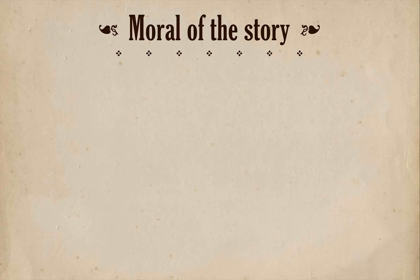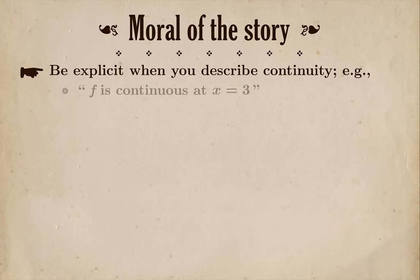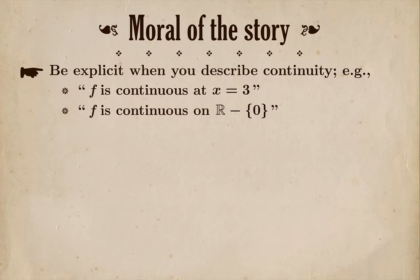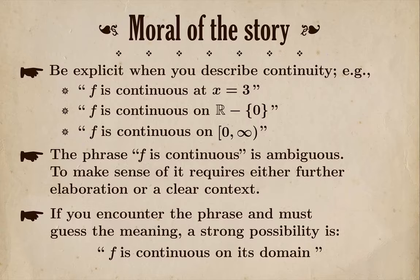So what's the moral of the story? Be explicit when you describe continuity. For example, you should say things like: f is continuous at x equals 3, or f is continuous on the set of real numbers minus 0, or f is continuous on the interval from 0 to infinity, 0 included. The phrase 'f is continuous' is ambiguous. To make sense of it requires either further elaboration or a clear context. If you encounter the phrase and must guess the meaning, a strong possibility is: f is continuous on its domain.